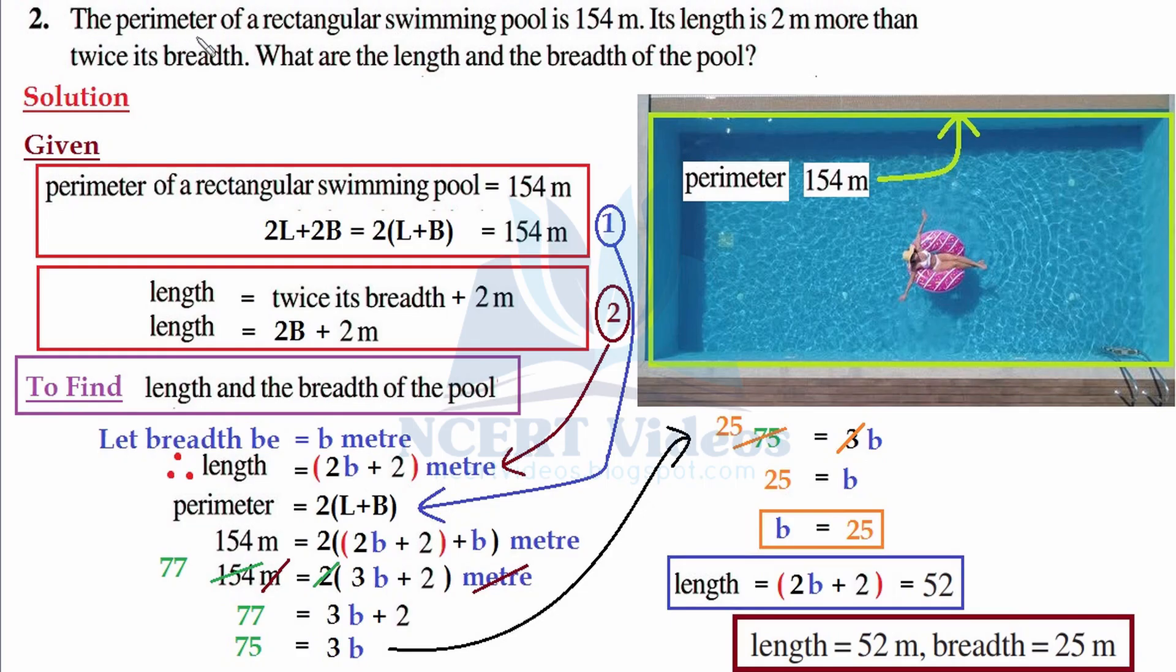Question number two: The perimeter of a rectangular swimming pool is 154 meters. Its length is 2 meters more than twice its breadth. What are the length and the breadth of the pool?